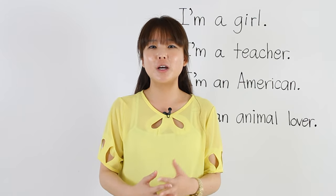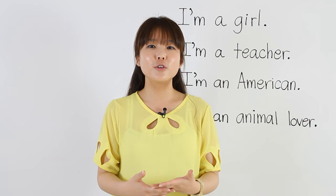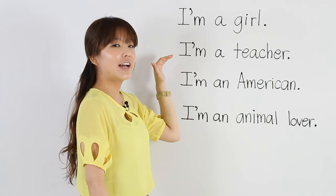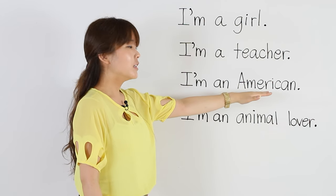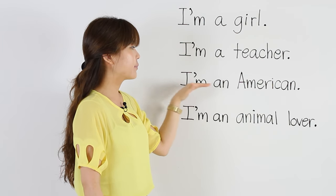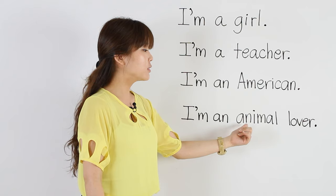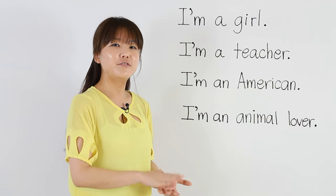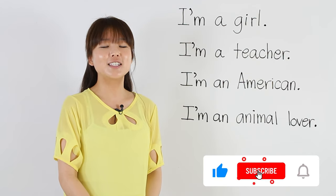I hope this video helped you understand how to use subjective pronouns, their be verbs, and also contractions. Before we go, I wanted to share a little about myself using the lesson. I'm a girl. I'm a teacher. I'm an American — the word American starts with the vowel A, so we say 'an'. I'm an animal lover — animal also starts with the vowel A, so we put 'an'. That means someone who loves animals. I love dogs and cats and other animals, so I'm an animal lover. That's it — thank you for watching, and I'll see you guys next time. Bye.